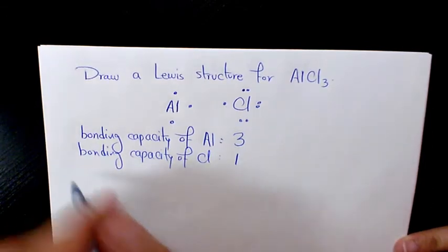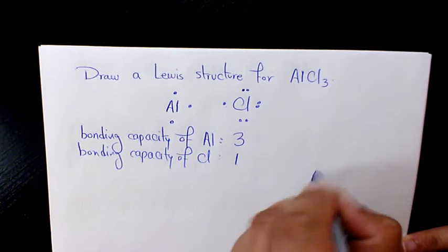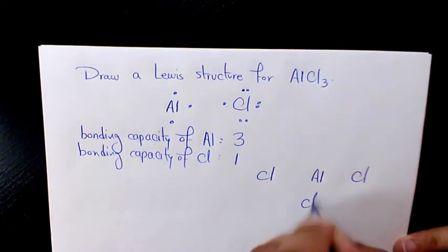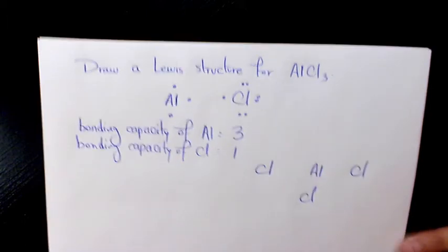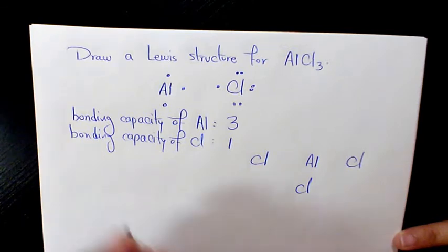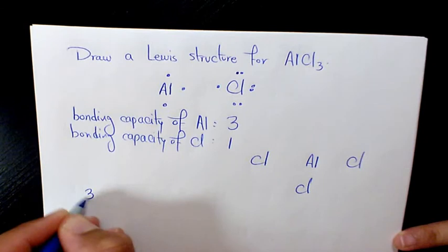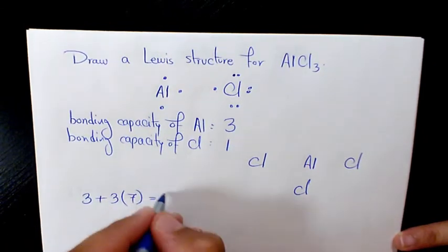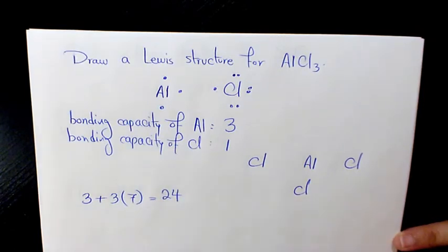Then what we need to do, we need to basically arrange them in this order, and then add up the number of valence electrons available in an atom of each of the elements. This number represents the total number of electrons or dots you will need to draw the Lewis structure. So Aluminium is three, and we have three Chlorine atoms and each of them is seven, so it's going to be three plus twenty-one, that's going to be twenty-four.